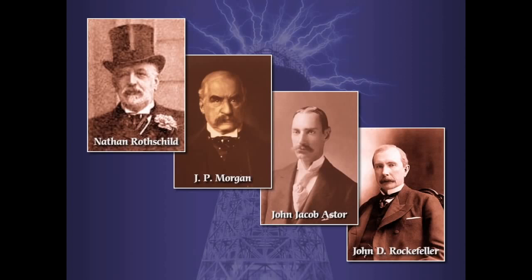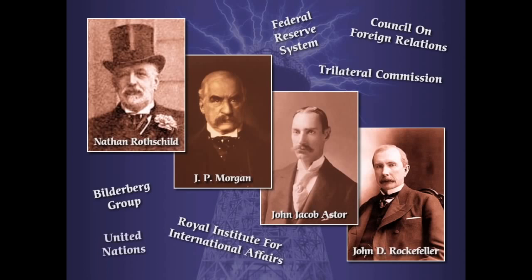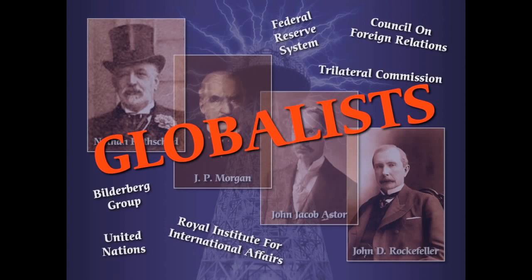This is what we need to understand to see how Tesla's name was eradicated — or significantly marginalized — from human history. These men and their family bloodlines are some of the most influential people in the creation of some of the world's largest globalist think tanks. What globalism really means is the centralization of power into fewer and fewer hands. I'm going to specifically talk about the Federal Reserve System, which isn't necessarily a think tank but a financial institution, which the Rothschilds largely dominate and control.